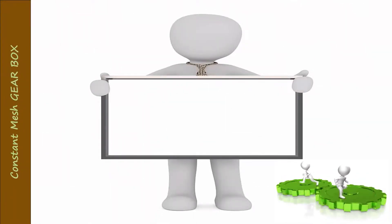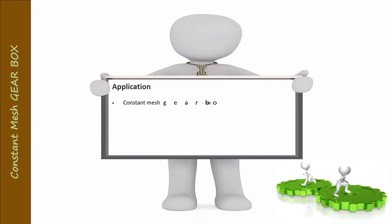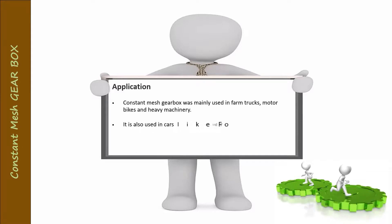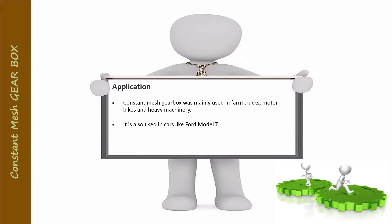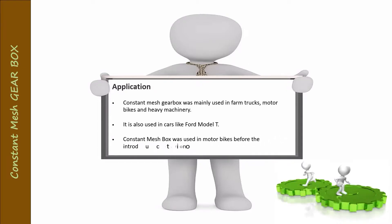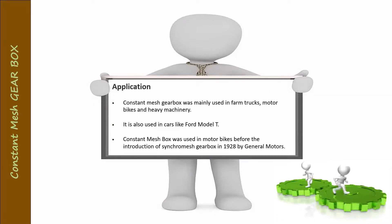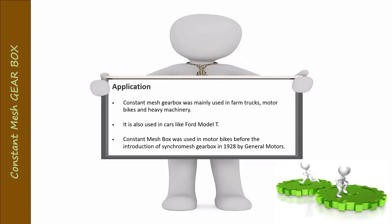Applications of the constant mesh gearbox: it is mainly used in farm trucks, motorbikes, and heavy machinery. It is also used in cars like the Ford Model T. The constant mesh gearbox was used in motorbikes before the introduction of the synchromesh gearbox in 1928 by General Motors.